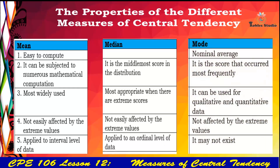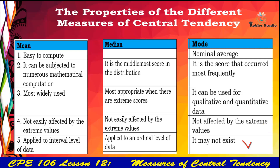Mode is a nominal average — it is the score that occurred most frequently. It can be used for both qualitative and quantitative data, is not affected by extreme values, and it may not always exist.